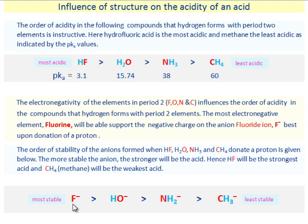The order of stability of the anions formed when HF, H2O, NH3 and CH4 donate a proton is given below. The more stable the anion, the stronger will be the acid. Hence, HF will be the strongest acid and methane will be the weakest acid.